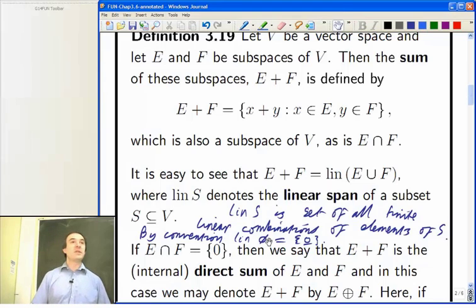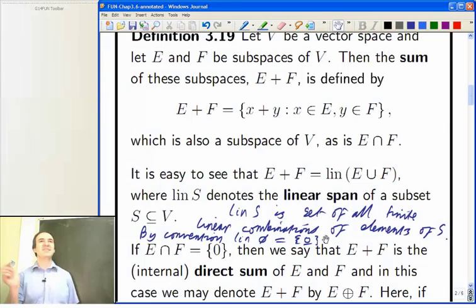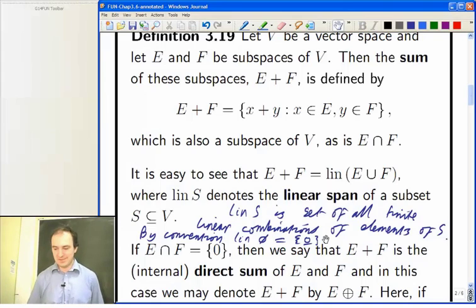However one can argue that the empty sum is zero and that the empty sum counts as a finite linear combination of elements of the empty set. So if one allows the empty sum as being a linear combination of things from the empty set then you're okay anyway. But in any case I will always have the linear span of something being a subspace. So I will follow the convention that the linear span of the empty set is zero. This is also convenient because you want this to be a zero dimensional space and you'd like to know what a basis for it is.